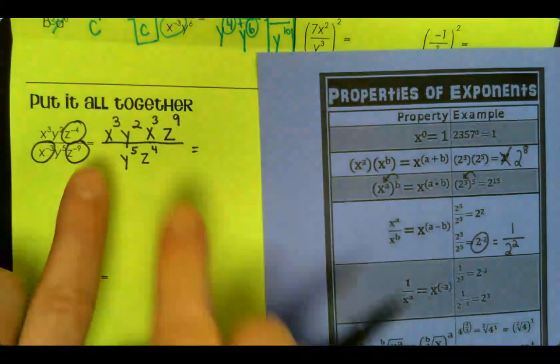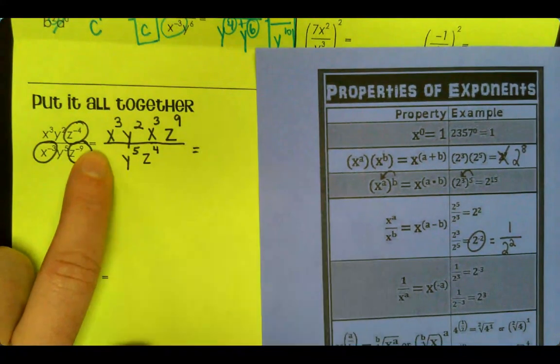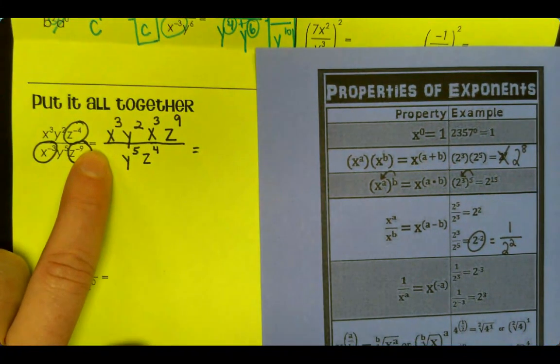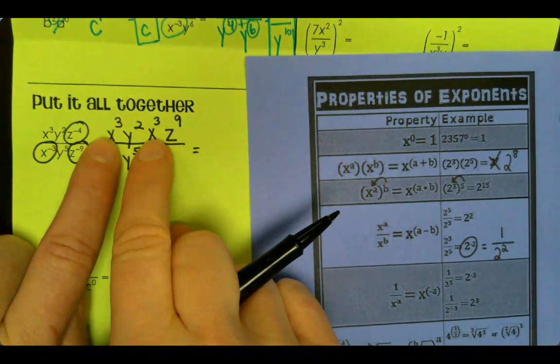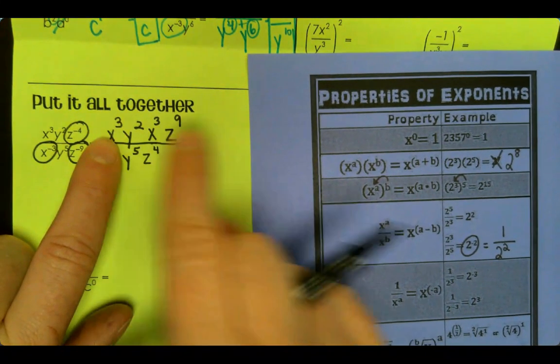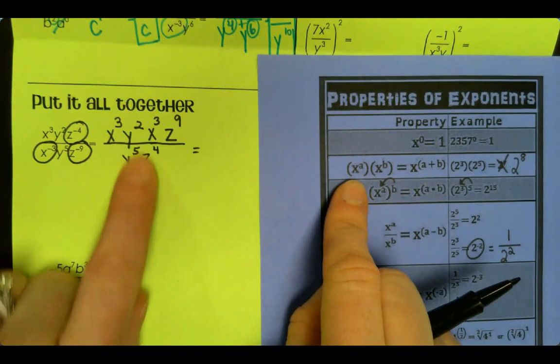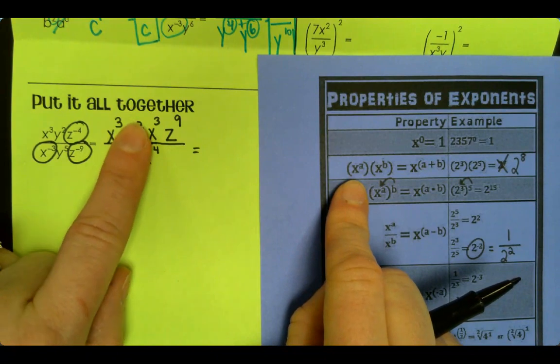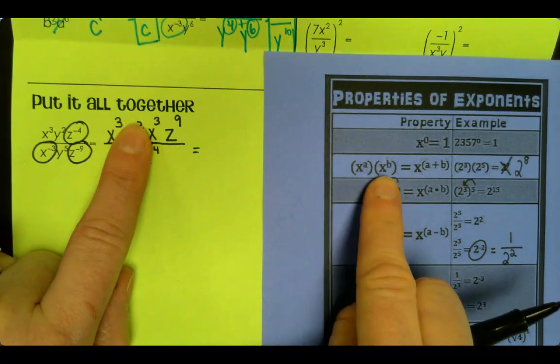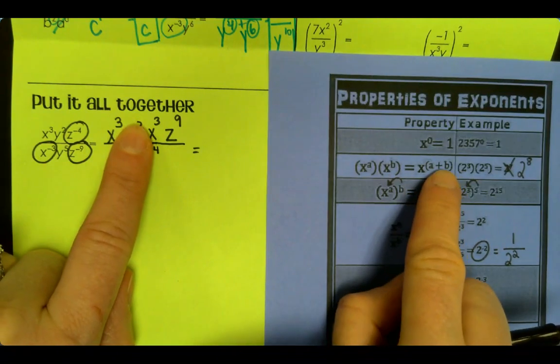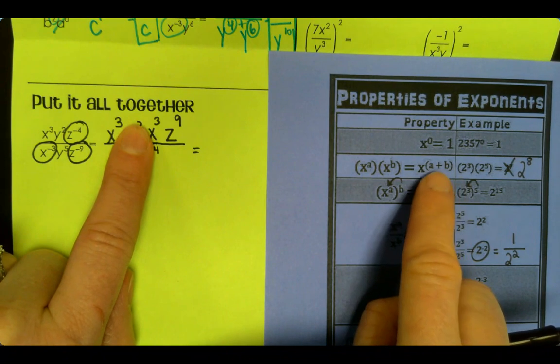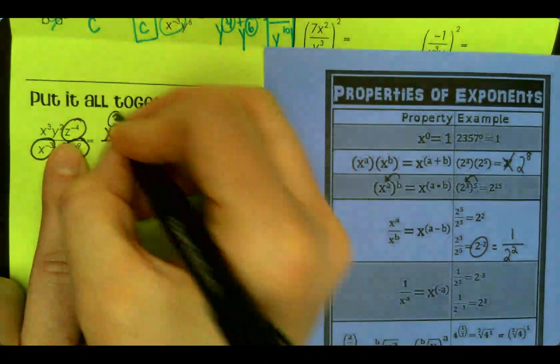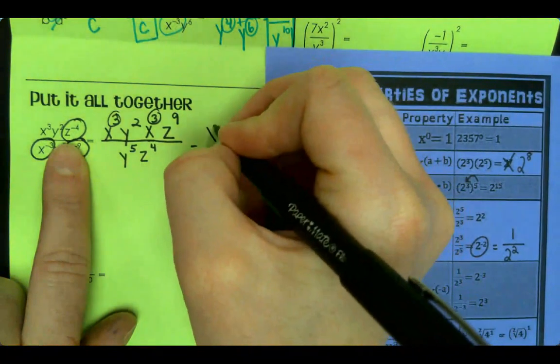Alright, now we want to simplify top and bottom. So we want to look at like terms or like bases. So I have X³ and X³. These are being multiplied. Even though there's a Y between it, if I just cover that up with my finger, I still have X³ times X³. So that means I'm going to add my bases. If you look back at the rule over here where I'm pointing, we're going to add our bases. So we're going to add 3 plus 3, making that X⁶.